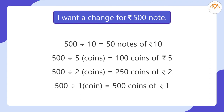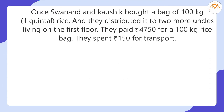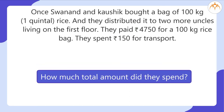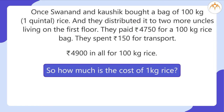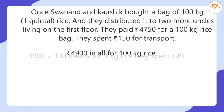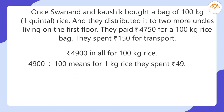Did you enjoy doing this? Here's one more example. Swanand and Kaushik bought a bag of 100 kg — that is one quintal of rice — and distributed it to two more uncles living on the first floor. They paid rupees 4750 for the 100 kg rice bag and spent rupees 150 for transport. How much total amount did they spend? Rupees 4900 in all. So how much is the cost of 1 kg of rice? It will be 4900 divided by 100, meaning for 1 kg rice they spent rupees 49.